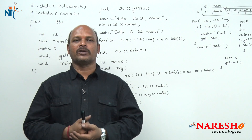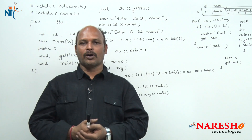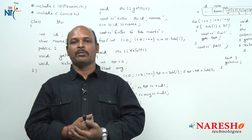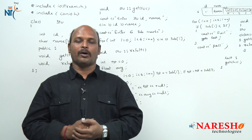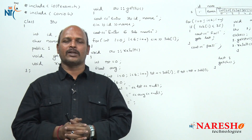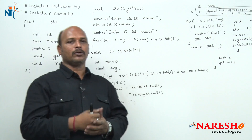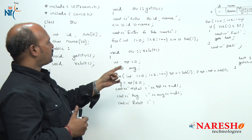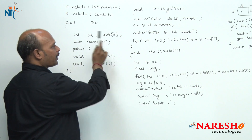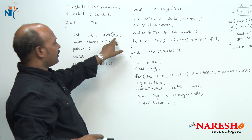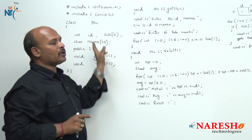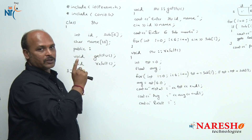In the previous session we discussed how to use the array inside the class — how to declare data members using arrays. But this time I am going to discuss how to declare objects using arrays, and first of all, why we have to declare objects using arrays. In this previous example, subject is an array able to store 6 subject marks under one name. But this data — one ID number, one name, 6 subjects — belongs to only one student.